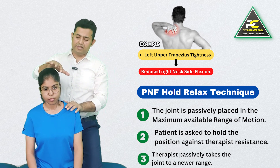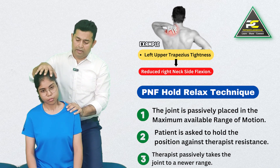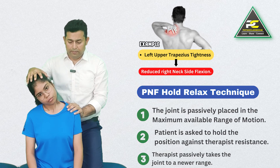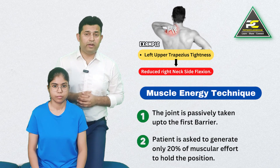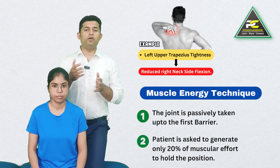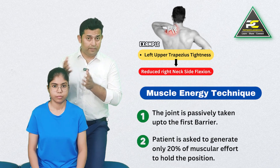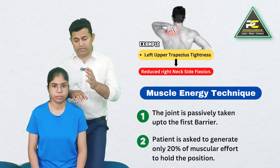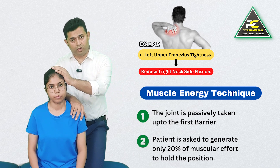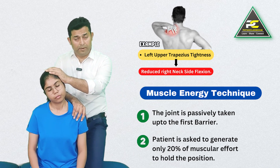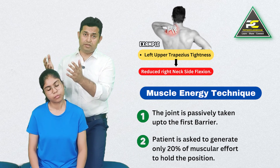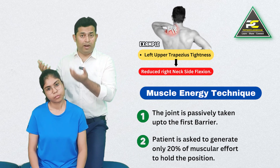In contrast, in the MET concept of treatment, it is not the therapist who induces the isometric contraction — it is the patient who is asked for a muscular effort of 20% of maximum voluntary contraction.